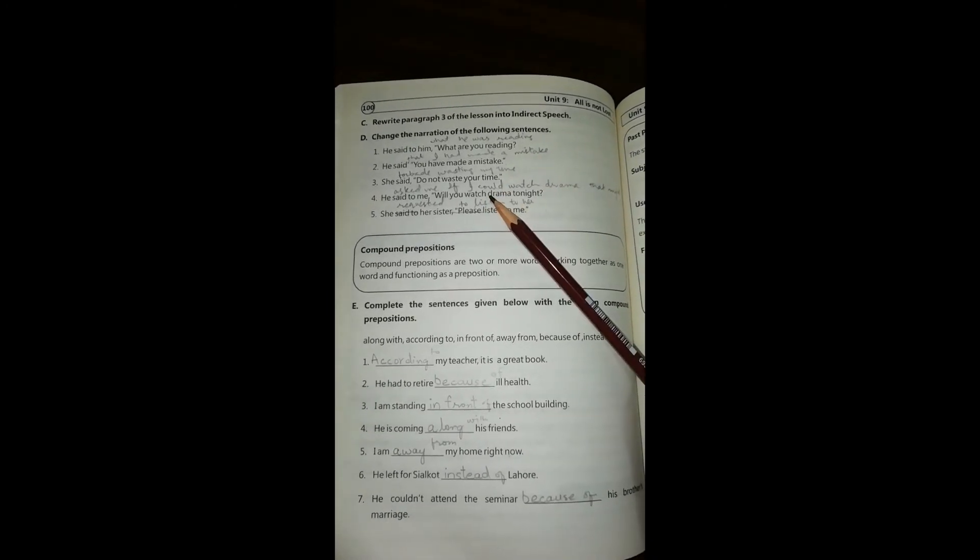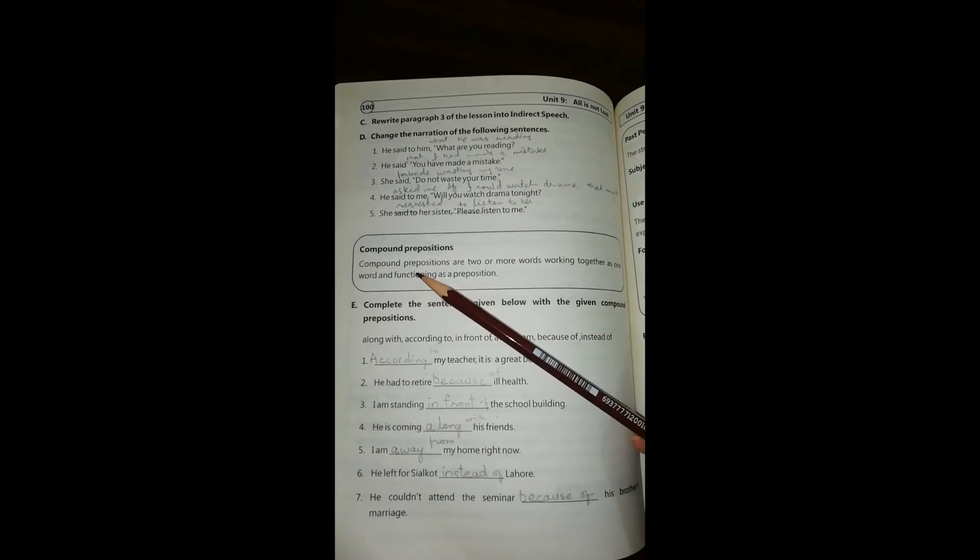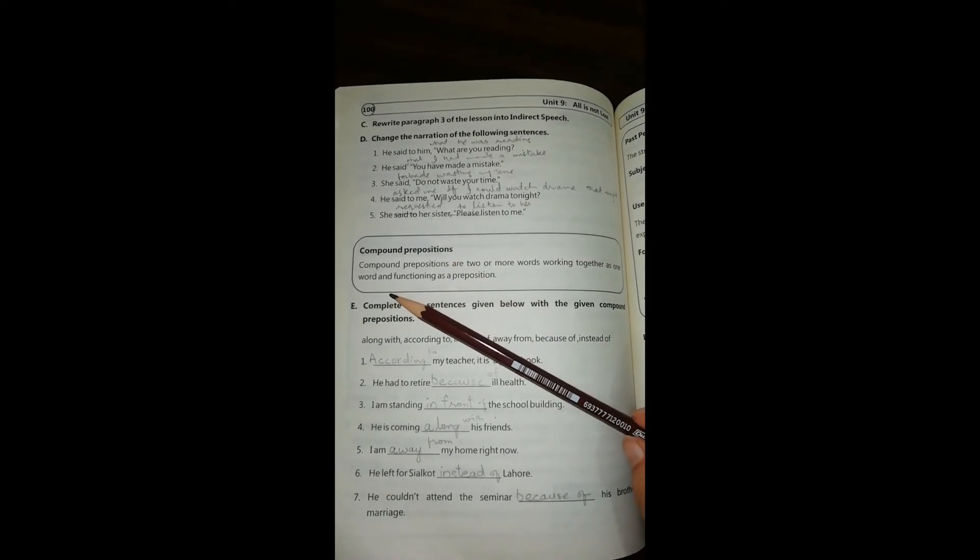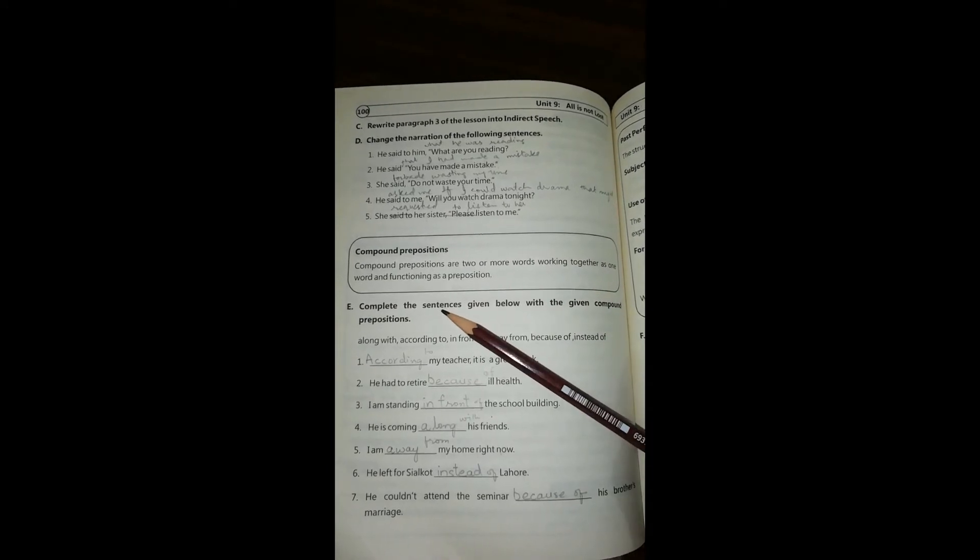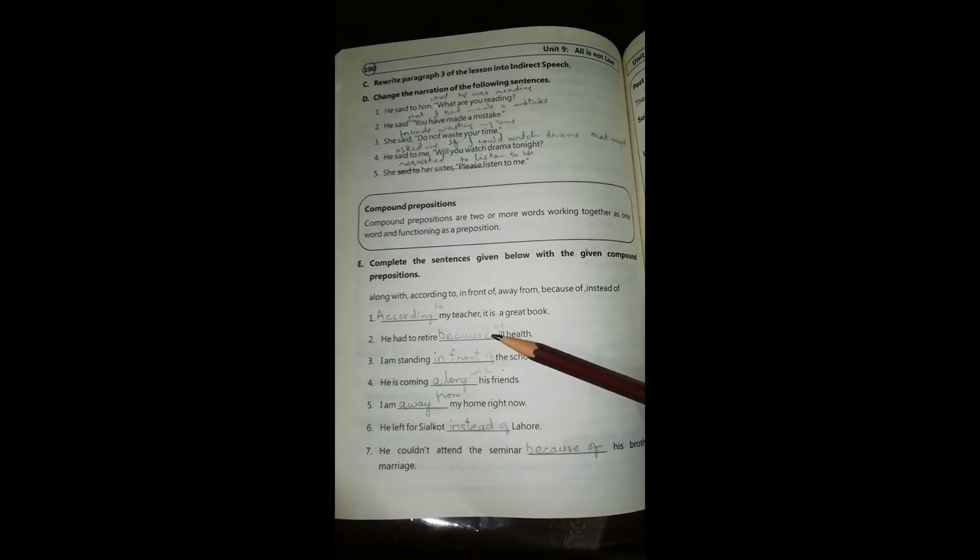Compound prepositions: what is a compound preposition? Compound prepositions are two or more words working together as one word and functioning as a preposition. We know very well that compound means two words. I have solved them, you can see.